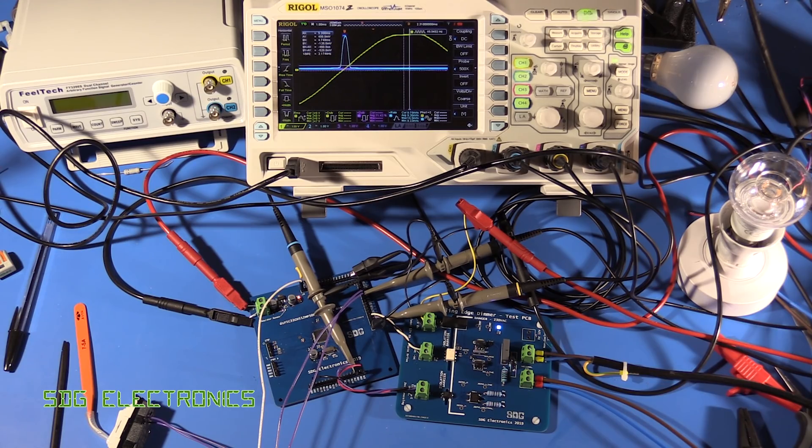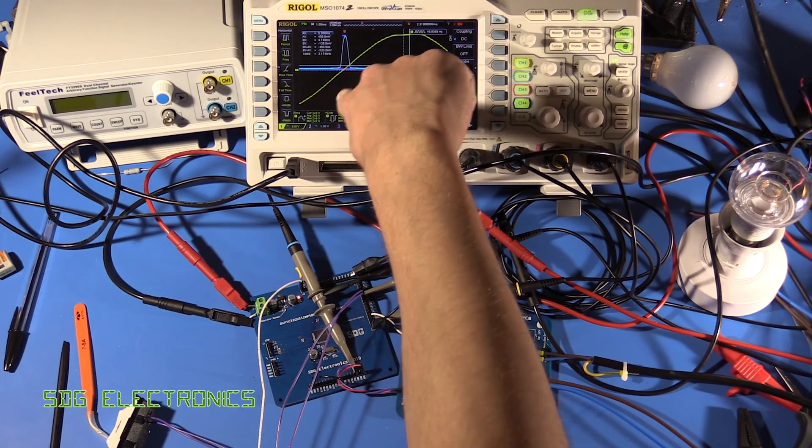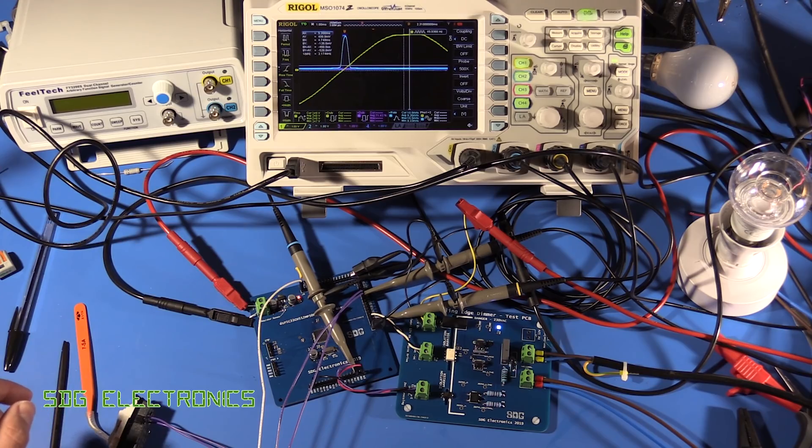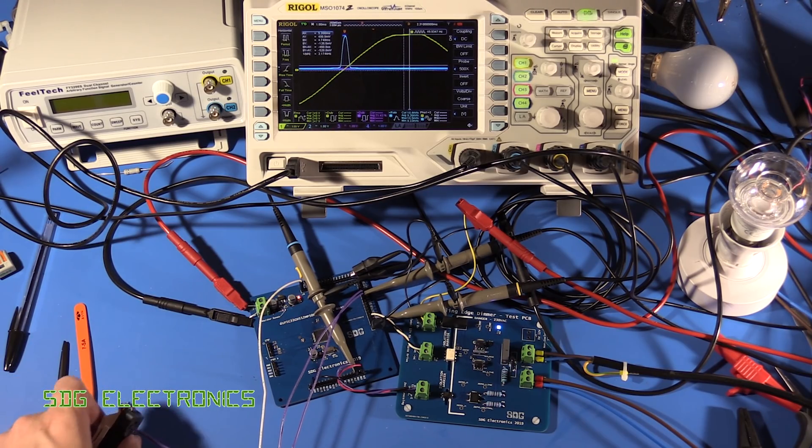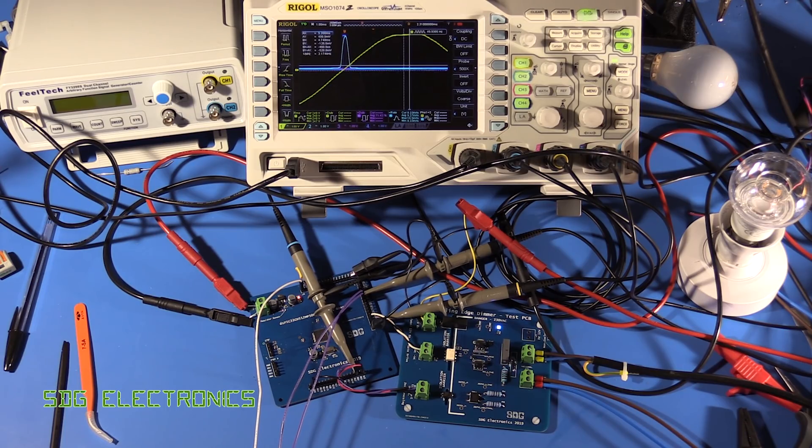okay so we're now plugged in directly to the mains the sinusoidal waveform is still plugged into the isolation transformer because it happens to have a couple of nice points to plug in the differential probe let's see if we get the same effect